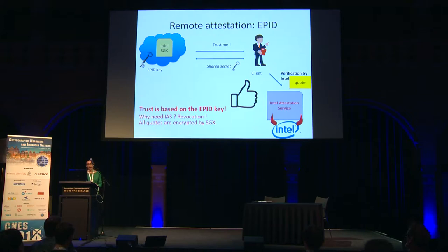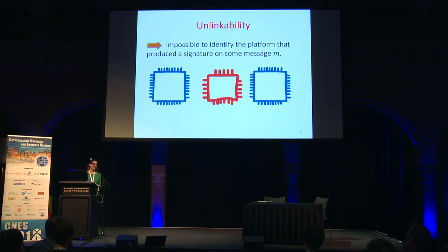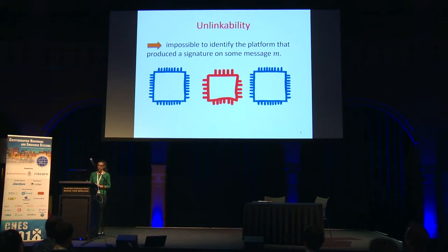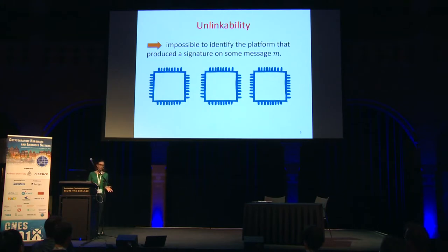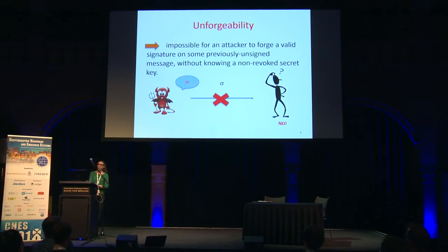That's a lot of information. To remedy this privacy problem, SGX implements a security guarantee called unlinkability. Unlinkability means it is impossible to identify which platform produced a given signature on a message M — a quote from the red processor is indistinguishable from quotes produced by any other processor. Another security guarantee is unforgeability: it is impossible for an attacker to forge a valid signature without knowing the secret key.